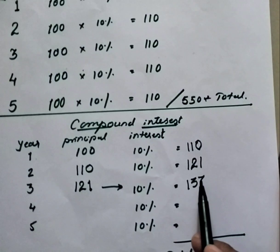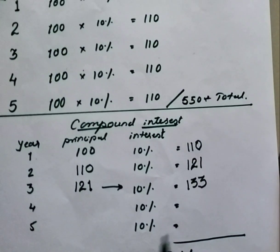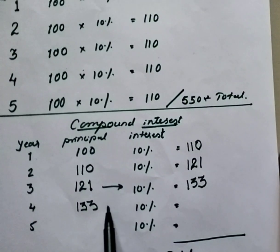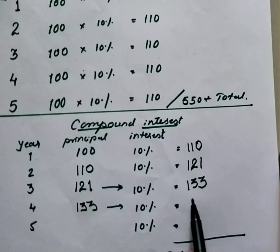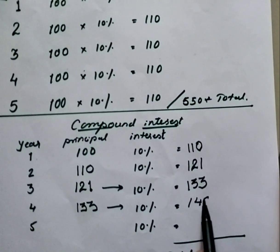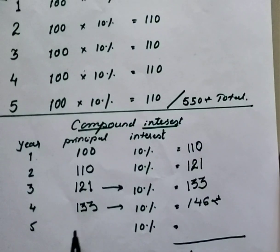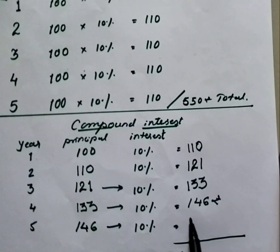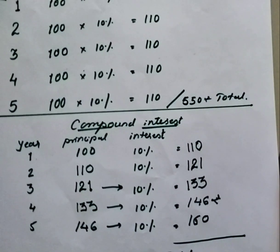On 121 rupees at 10 percent, he or she will get 133 rupees in the third year. Now for the fourth year, 133 rupees is the principal at 10 percent interest — that person will get 146 rupees. For the fifth year, on 146 rupees at 10 percent interest rate, he will get 160 rupees.